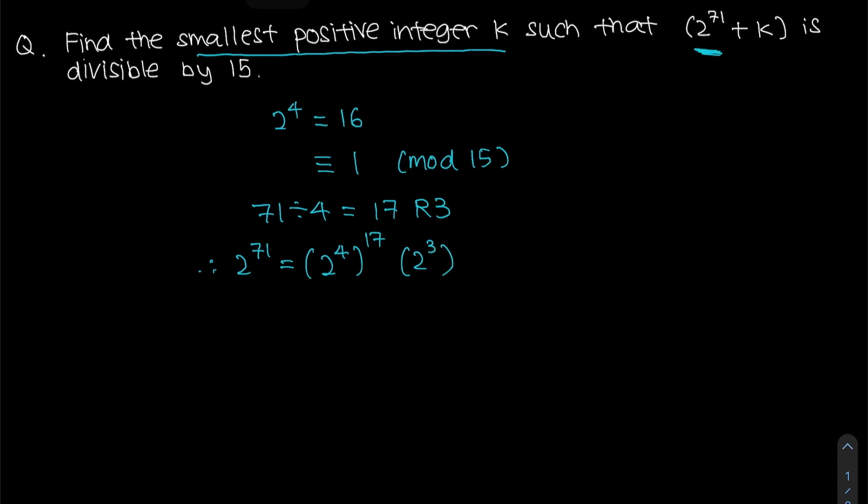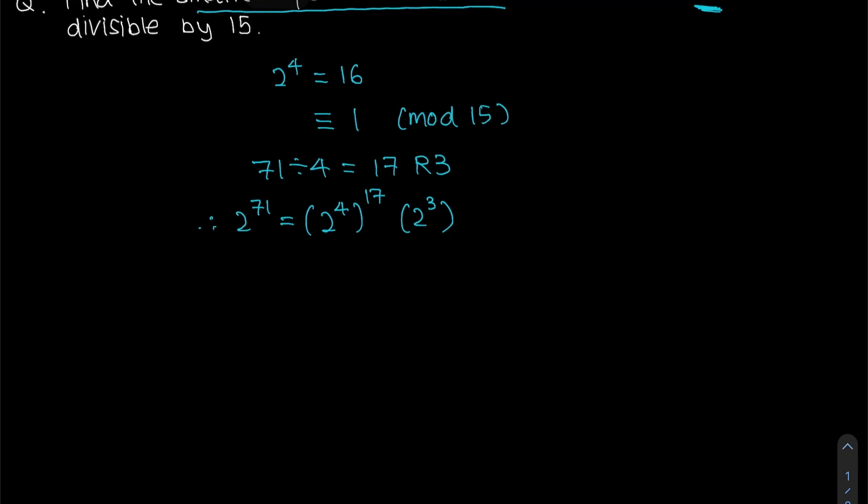And we know that 2 to the power of 4 when you mod 15 this will give you 1. So what that means is if we mod 15 over here, we will get 1 to the power of 17 as well as 2 to the power of 3 mod 15.